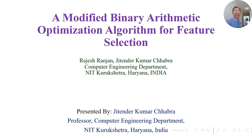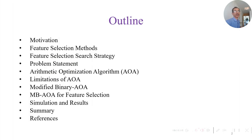My scholar Rajesh Ranjan and I have authored this paper, which is related to an optimization algorithm for feature selection in the domain of computer science and engineering. The overview of the presentation covers feature selection methods, search strategy, problem statement, the AOA algorithm, its limitations, modifications, results, and conclusions.